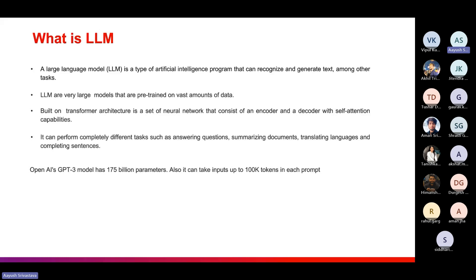The encoder takes input from the user, converts it into vector embeddings, assigns weights, and passes it to the decoder. The decoder then does a similarity search across all the data it has and generates a response. The key part here is the self-attention mechanism — for example, if you ask 'What is RAG?' to ChatGPT, the words 'what' and 'is' get assigned less priority, while 'RAG' gets more weight, so the model stays on topic and retrieves information pertaining to that subject.